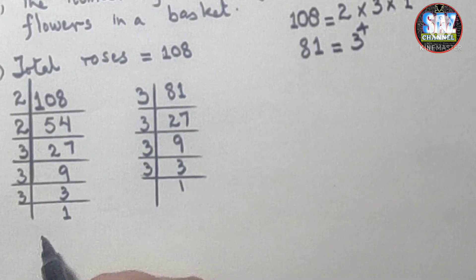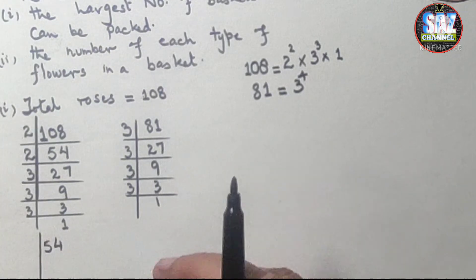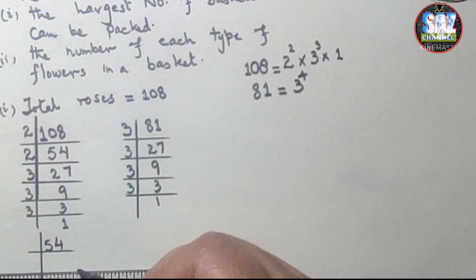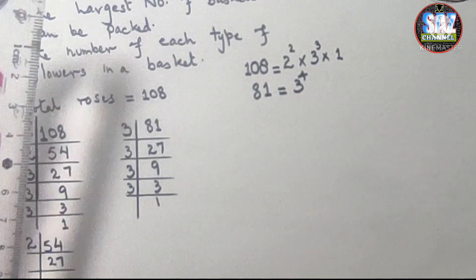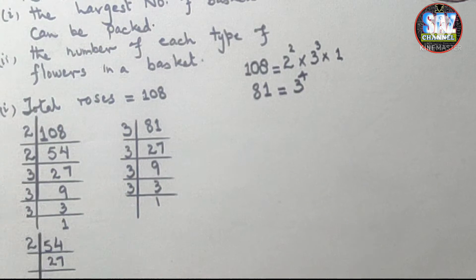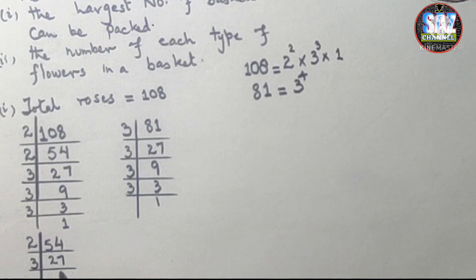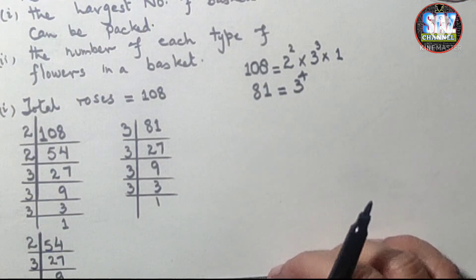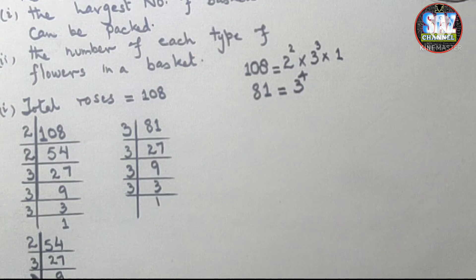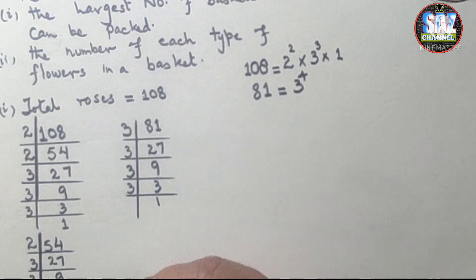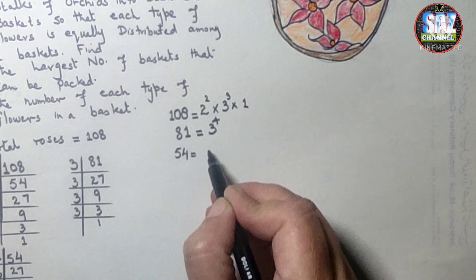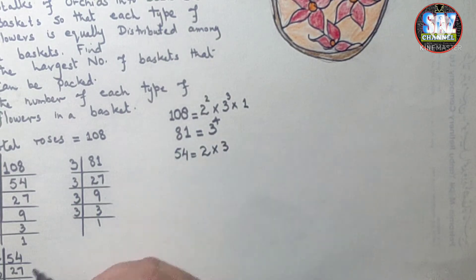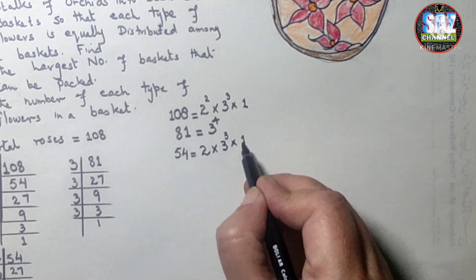For 54: the unit digit is even, so we can divide by 2. 54 ÷ 2 = 27. Then the suitable table is 3: 27 ÷ 3 = 9, ÷ 3 = 3, ÷ 3 = 1. So for 54, 2 is coming once only and 3 is coming three times, giving us 2¹ × 3³. Now we have to find the HCF.